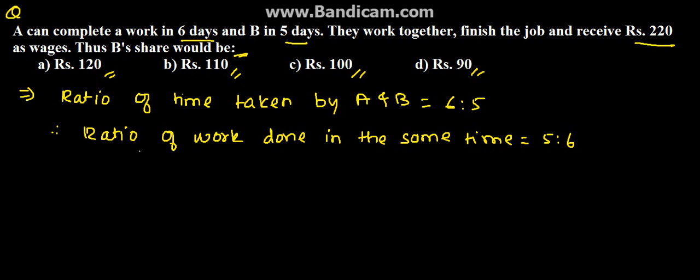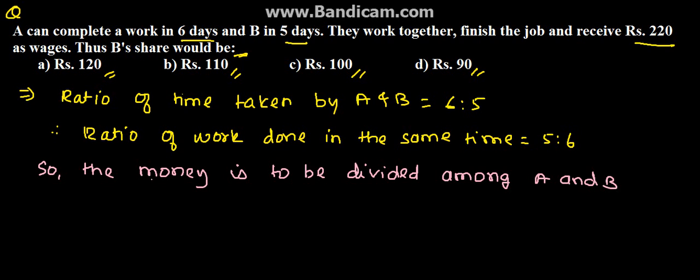So, the money is to be divided among A and B in the ratio 5 is to 6.